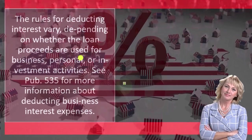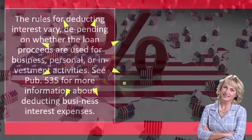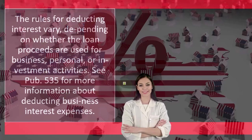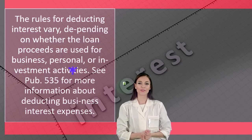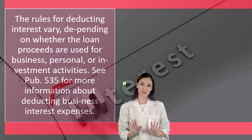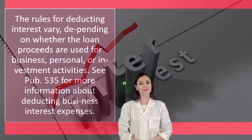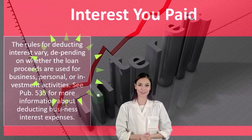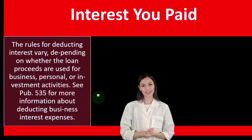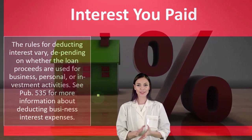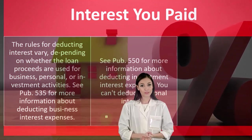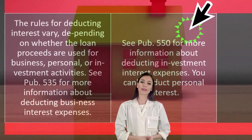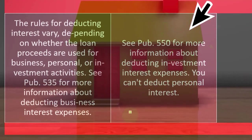The rules for deducting interest vary depending on whether the loan proceeds are used for business, personal, or investment activities. See Publication 535 for more information about deducting business interest expenses. If you had a Schedule C, the interest that you paid would basically be business-related. See Publication 550 for more information about deducting investment interest expenses.